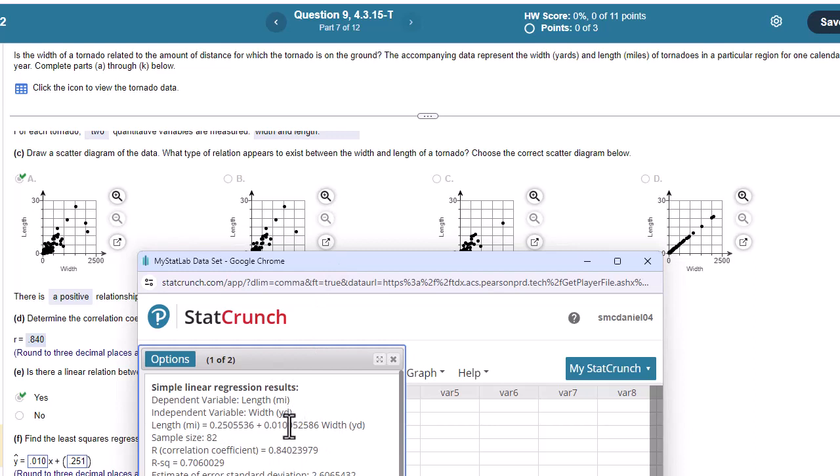Again, StatCrunch does it the way most statistical programs do, and they switch these. The MyLabs, I'll be honest, it sort of assumes you're going to be using the TI-83/84 calculator, and its default regression puts it in this form.